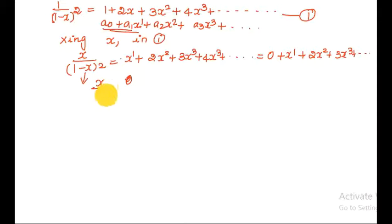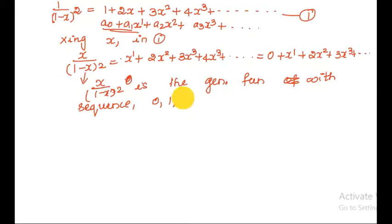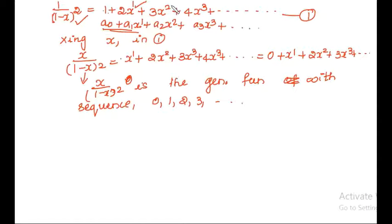So 1 divided by (1 minus x) whole squared is the generating function with the generating sequence. What is the sequence here? The sequence is: a0 value is 0, then 1, 2, 3, 4. So this is the generating sequence — 0, 1, 2, 3, 4.